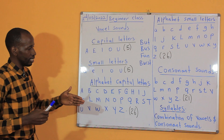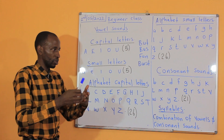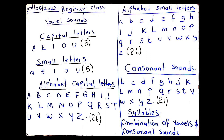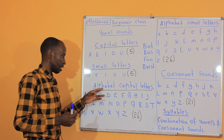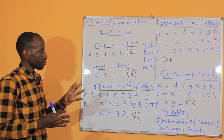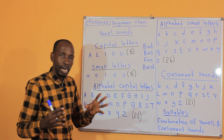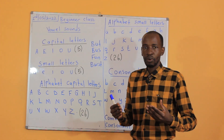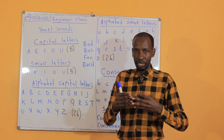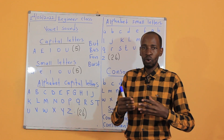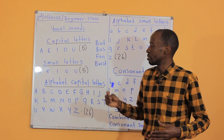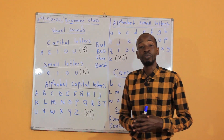Now we shall see how to make syllables when we start to make words. Let's go to alphabet capital letters. When we are making words, we combine or make together alphabets and vowel sounds. So these ones are also very important. Let's go and pronounce them now.